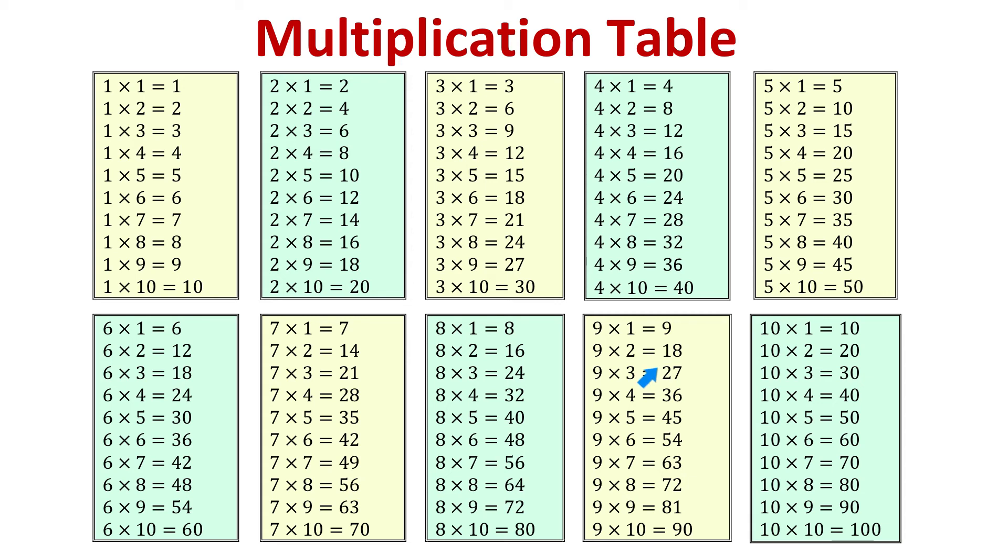1 plus 8 is 9, 2 plus 7 is 9, 3 plus 6 is 9, 4 plus 5 is 9, and so on. Also, all the products starting with 18 are 2-digit numbers.